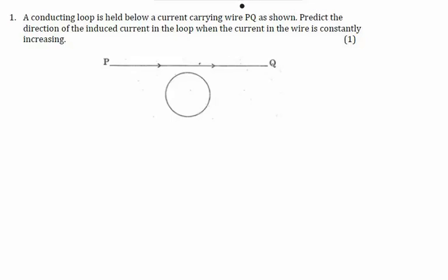So dear students, in this example what it states is a conducting loop is held below a current-carrying wire PQ as shown. Predict the direction of the induced current in the loop when the current in the wire is constantly increasing. So what we can see is that there is current flowing from P to Q and this current is constantly increasing with time. Now because of this increasing current, we know there will be magnetic lines of forces.